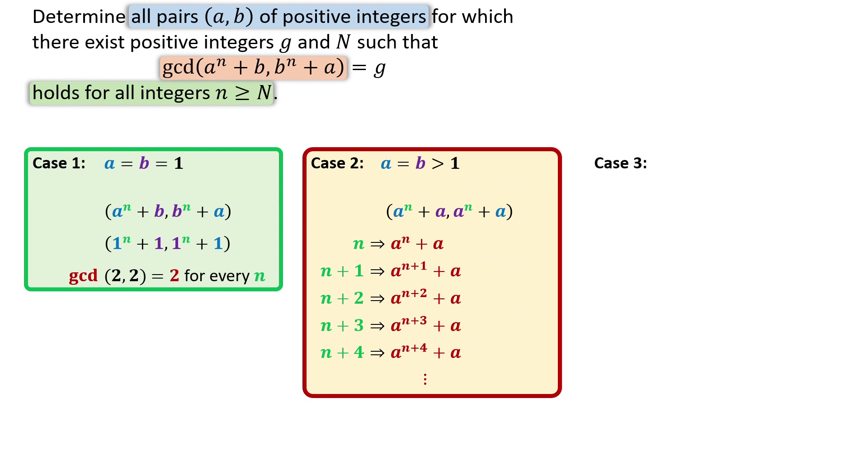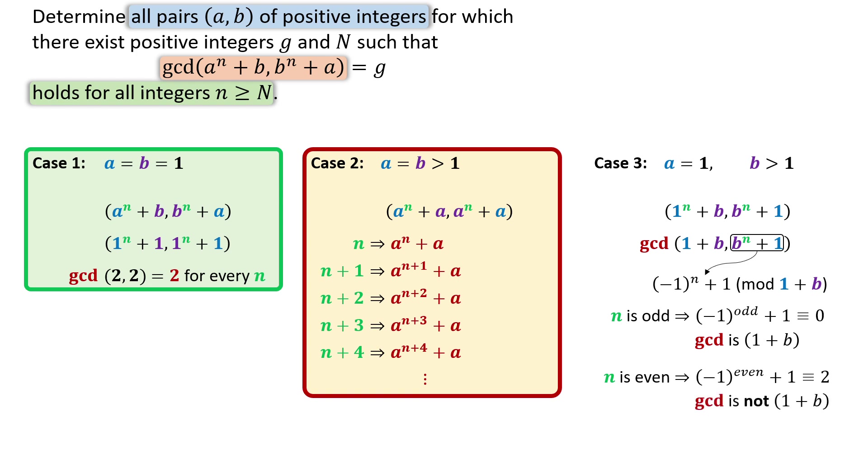Let's consider another case where a is 1 and b is greater than 1. The expressions become 1 plus b and b to the n plus 1. Using the remainder theorem, when b to the n plus 1 is divided by 1 plus b, the remainder is negative 1 to the n plus 1. If n is odd, the remainder is 0, so the GCD is 1 plus b. If n is even, the remainder is 2. Since b is greater than 1, 2 is not divisible by 1 plus b, and thus the GCD is not 1 plus b. This means the GCD alternates with even and odd value of n, so it is not constant.